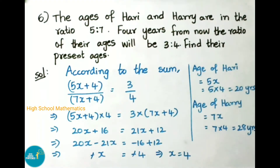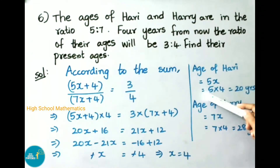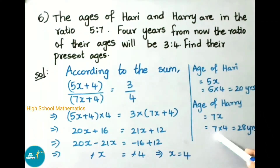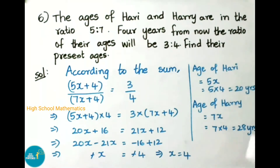Now let us find the ages of Hari and Harry. Age of Hari is 5x = 5 × 4 = 20 years. Age of Harry is 7x = 7 × 4 = 28 years. Therefore, age of Hari is 20 years and age of Harry is 28 years.